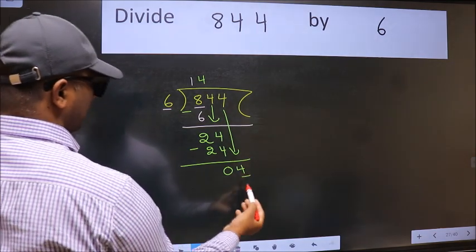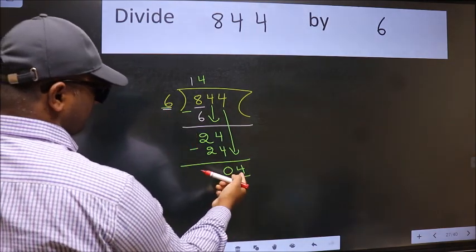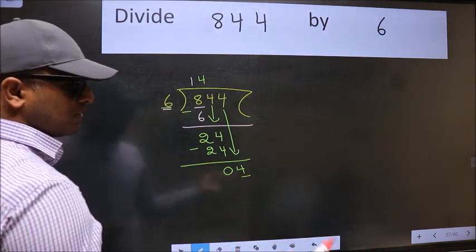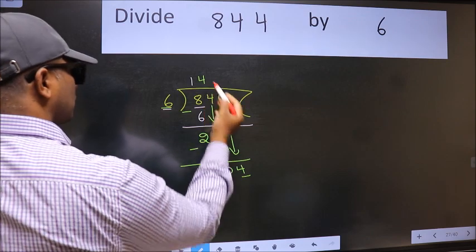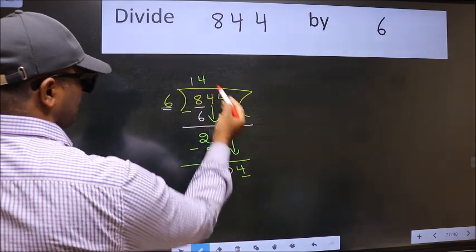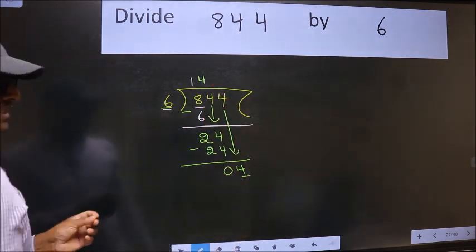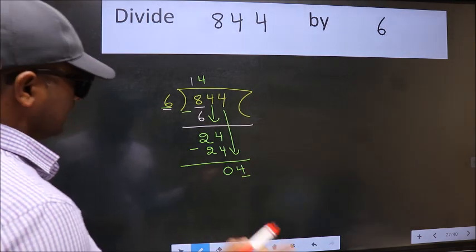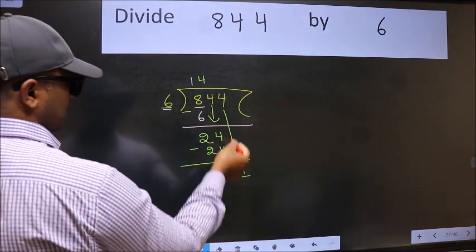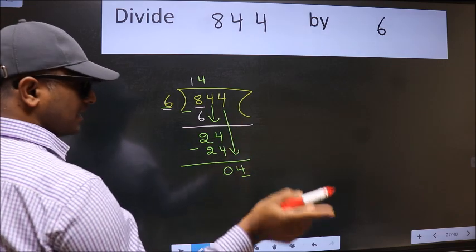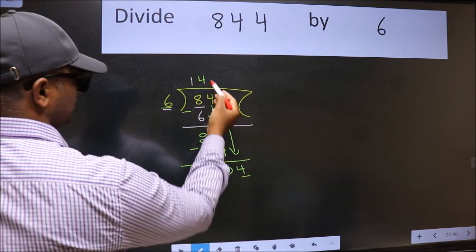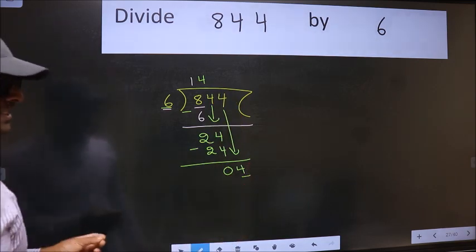Here we have 4 and here 6. 4 is smaller than 6. So what many do is, they directly put dot, take 0. Which is wrong. Why is it wrong? Because just now you brought this number down. And in the same step, you want to put dot, take 0. Which is wrong.